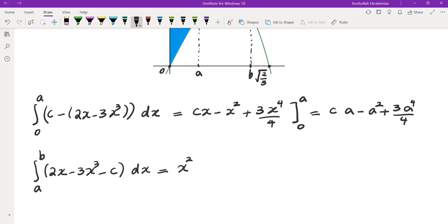Let's integrate this one. So that's x squared minus 3x to the fourth over 4 minus cx, from A to B.